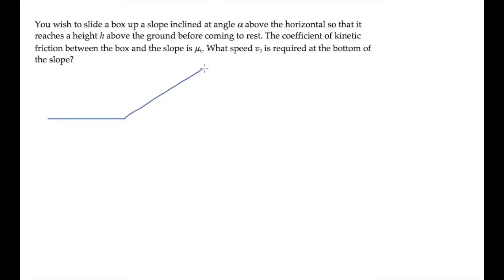The box in this problem slides up a slope inclined at angle alpha, so that it comes to rest after rising to a height h above the ground. There's friction between the box and the slope, and we're asked to find the speed v0 that the box needs at the bottom of the incline.